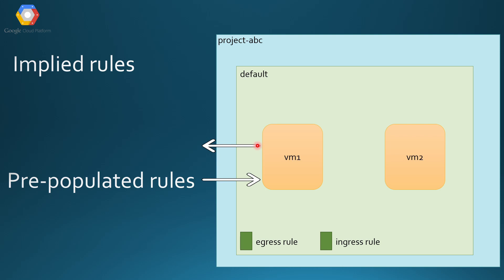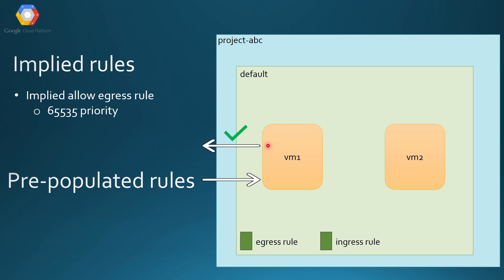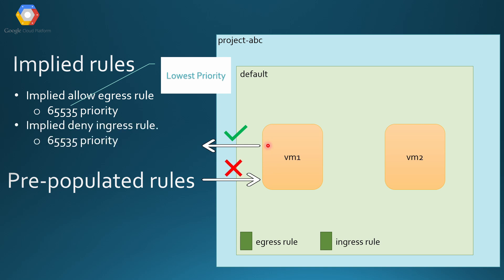Whenever you create a project and a network, by default you get implied rules, and these implied rules you cannot see in the console. There are two implied rules: one allows egress traffic from your network, meaning you can connect to outside from your VM; the other is a deny ingress rule. The priority for these two rules is the lowest priority, which is 65535, meaning any other rule you create will take precedence over them.